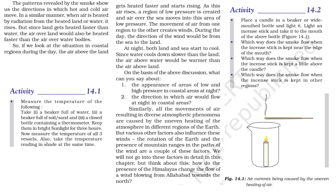The atmosphere covers the Earth like a protective blanket. Since air is a bad conductor of heat, the atmosphere prevents a sudden increase in temperature during daytime. During the night, it slows down the escape of heat into outer space. Thus it keeps the average temperature of Earth fairly stable during both day and night, ensuring the right amount of heat is received by Earth and allowing living organisms to survive. This is the important role played by the atmosphere.